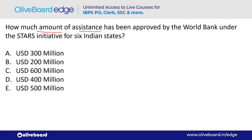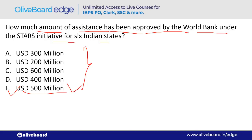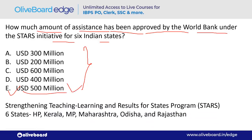How much assistance was approved by the World Bank under the STARS initiative for 6 Indian states? The amount is $500 million US dollars. STARS stands for Strengthening Teaching Learning and Results for States Program. The 6 states are Himachal Pradesh, Kerala, Madhya Pradesh, Maharashtra, Odisha, and Rajasthan.